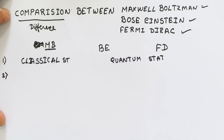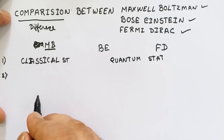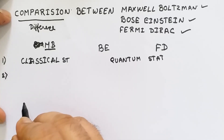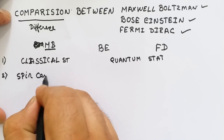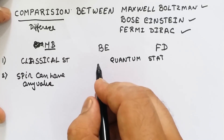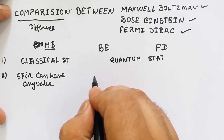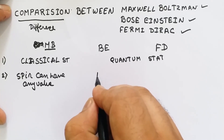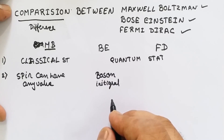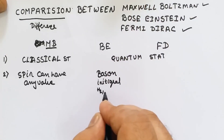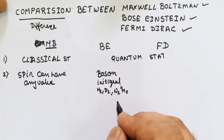The second point of comparison: in Maxwell-Boltzmann distribution, as it was given before the advancement of quantum statistics, the spin of the particles considered can have any value. In Bose-Einstein statistics, only particles with integral spins are considered. These particles are known as bosons and have integral spin — 0, 1, 2, 3, and so on. A few examples of bosons are hydrogen, deuterium, nitrogen, and helium.